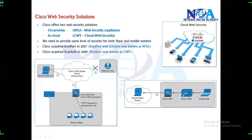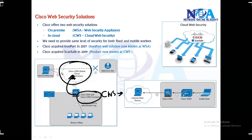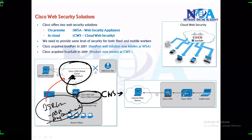To make cloud web security possible, you configure CWS connectors on your gateway devices to redirect traffic to the cloud infrastructure. There are different options: most ISR G2 routers and Cisco ASA firewalls support this. For remote users, the AnyConnect Mobility Client software can also be used to redirect traffic to the cloud infrastructure.